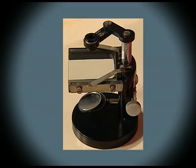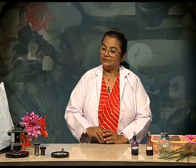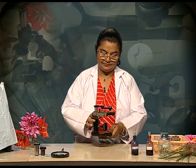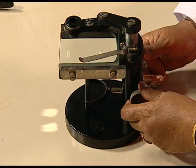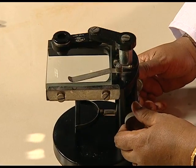Let's move on to another type of microscope called the dissecting microscope or the dissection microscope. A dissecting microscope is used to observe whole mounts of small organisms, parts of plants or animals, and also for dissecting small organisms — hence the name. This is a dissecting microscope. Let us see the different parts of a dissecting microscope.